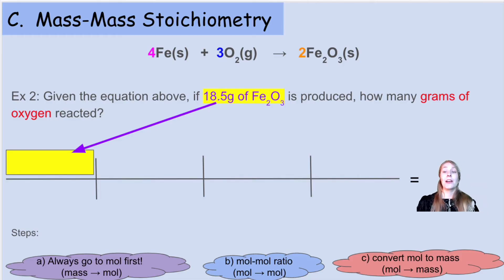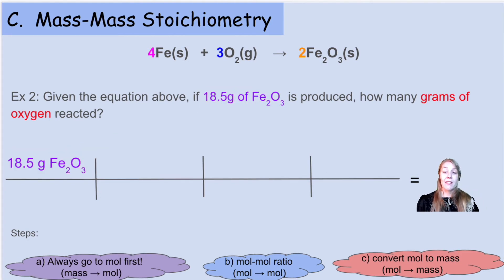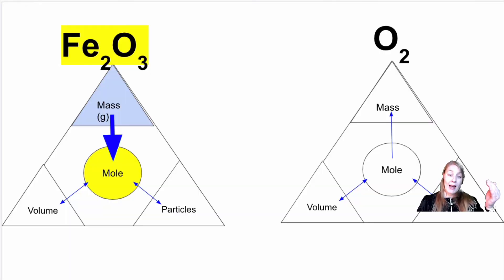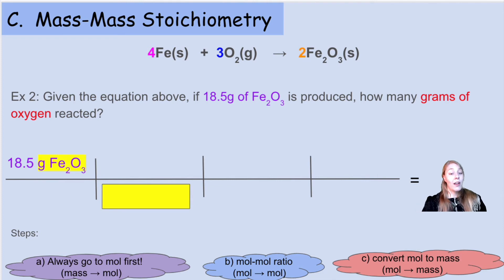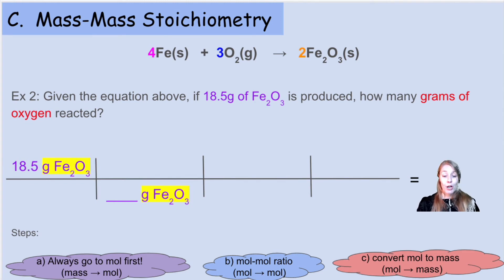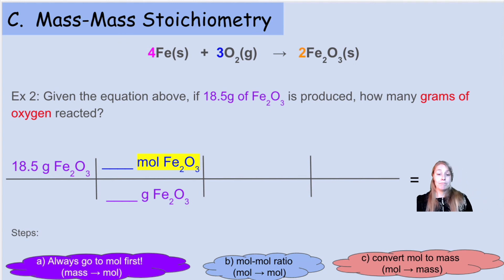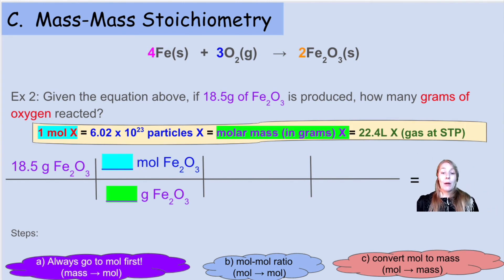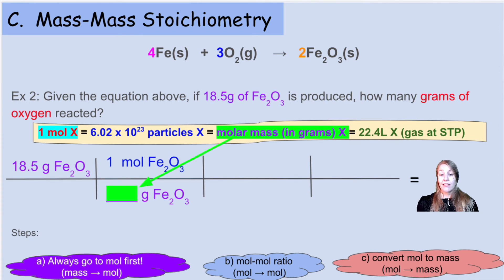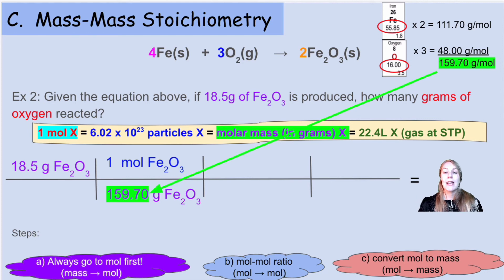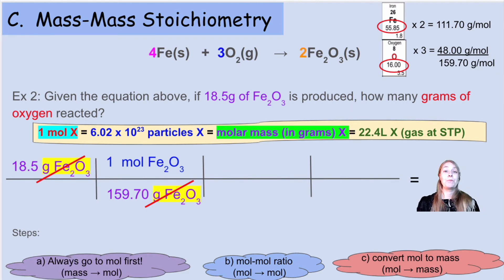We start with our given — 18.5 grams of Fe₂O₃ — in the top left. Step one: convert grams to moles of Fe₂O₃. Grams of Fe₂O₃ goes on the bottom; moles of Fe₂O₃ goes on top. We use the equivalency statement: one mole of Fe₂O₃ equals 159.70 grams per mole (already calculated from the previous problem). Grams of Fe₂O₃ cancels, leaving us with moles of Fe₂O₃.